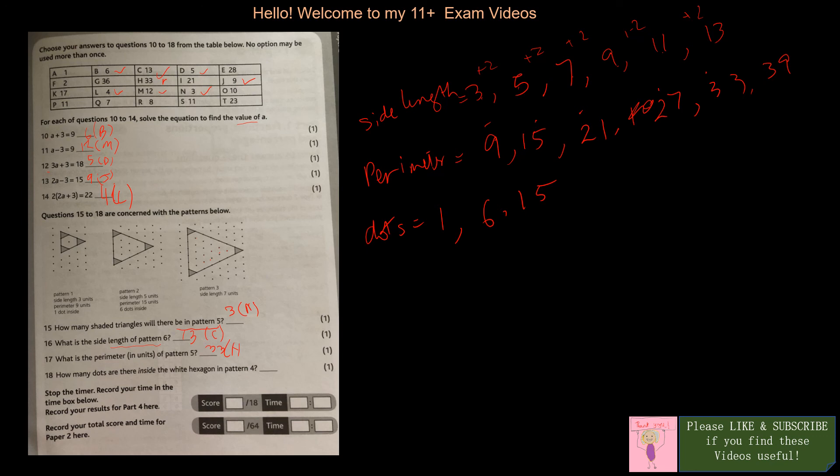And 18 is, how many dots are inside the white hexagon in pattern 4? So what's the next in the series? I have 1, 6, 15. This is 1 plus 5 plus 9, so they're increasing by 4. Then plus 13, so 15 plus 13 is 28. So I get 28 dots, so 28 is E. So E is my answer.